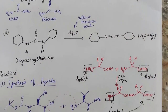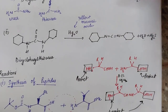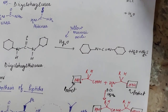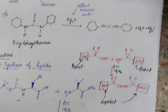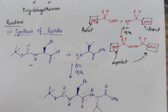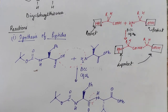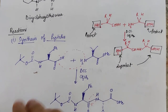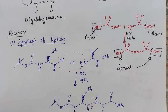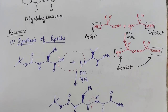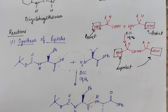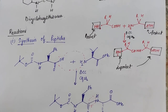Moving on to the reactions that DCC facilitates: the first type is peptide synthesis. Peptides are synthesized from amino acids — two amino acids combine to form a peptide bond.